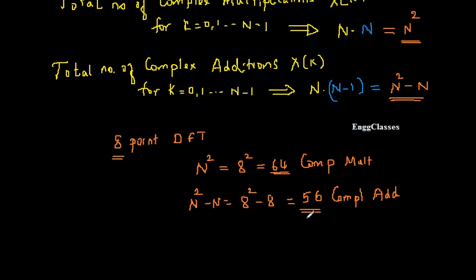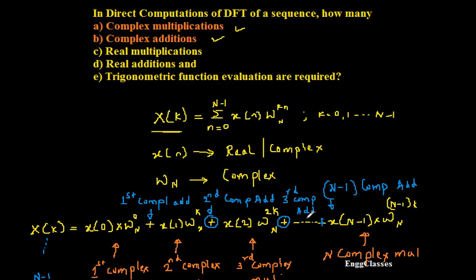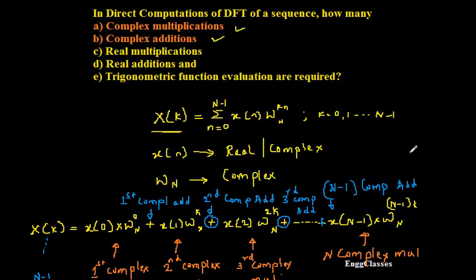In conclusion, the number of complex multiplications required for direct DFT computation is N², and the number of complex additions is N²−N. I have explained everything step by step. If you have any doubts, please let me know in the comment section. Subscribe to NG Classes for more videos on digital signal processing. In the next video we will consider how many real multiplications, real additions, and trigonometric function evaluations are required. Thank you for watching.